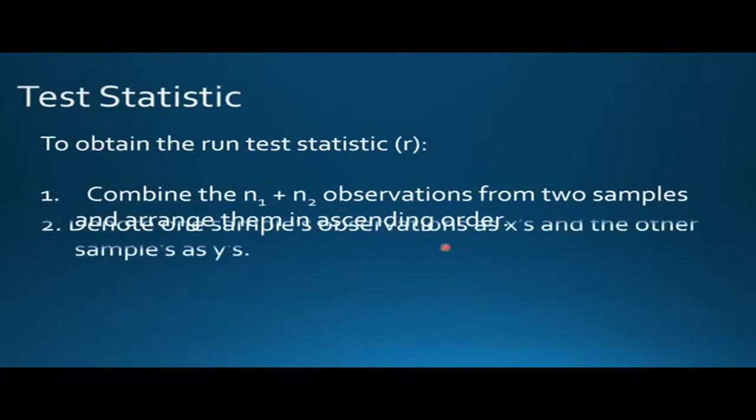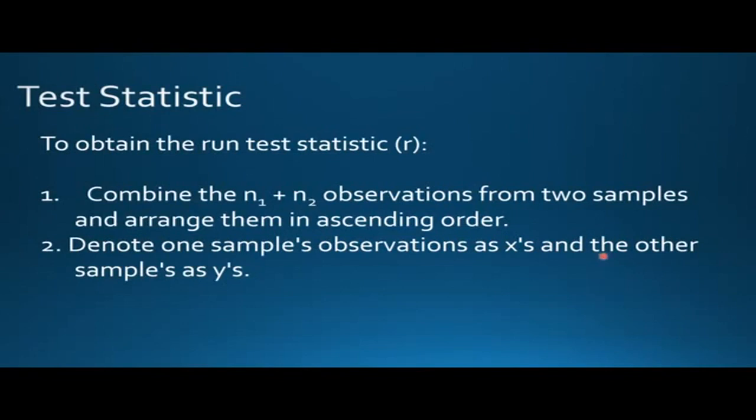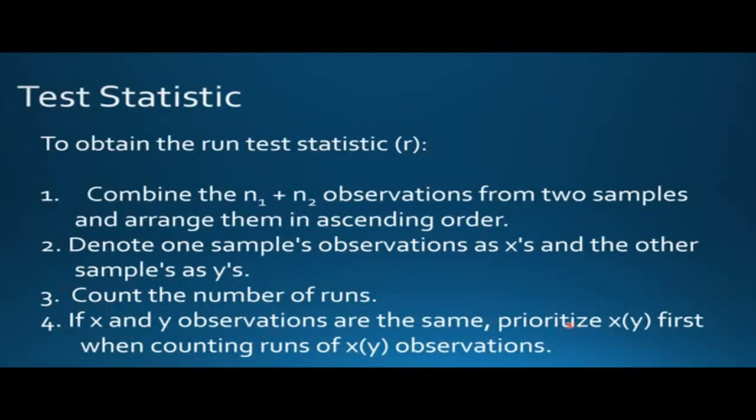Then we will denote one sample's observations as x and the other sample as y. Then we will count the number of runs. And if x and y observations are the same, we will prioritize x(y) first when counting runs of x(y) observations.